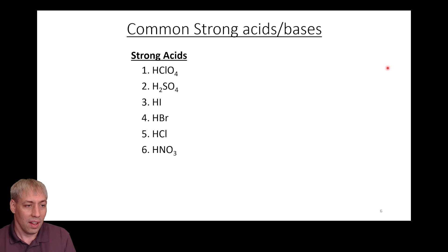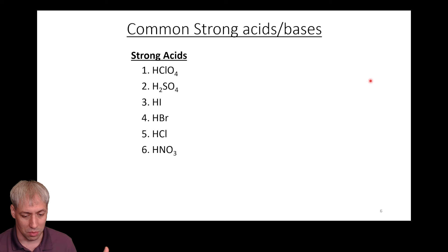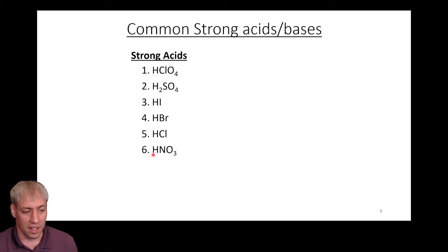It's worthwhile to memorize this. There are six common strong acids — the ones that completely ionize, completely dissociate, going almost entirely to the product side. Here's the list: perchloric acid, sulfuric acid, HI, HBr, HCl, and nitric acid. These are the common strong acids.